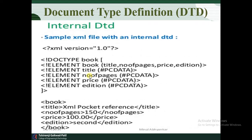Here is an example of an internal DTD. We write XML version 1.0, then DOCTYPE book — where book is the root element. The element book has child elements: title, number of pages, price, and edition. The element title is of type PCDATA (parsable character data), as are number of pages, price, and edition. The book root element contains these child elements, and they must all be written in the same defined sequence.